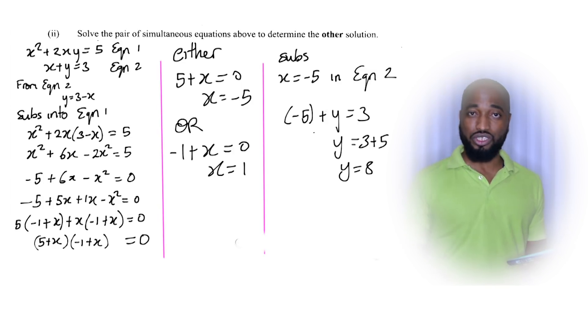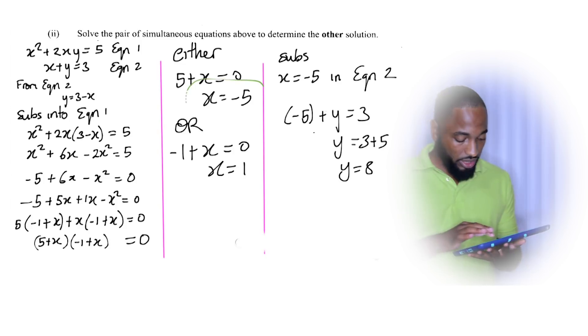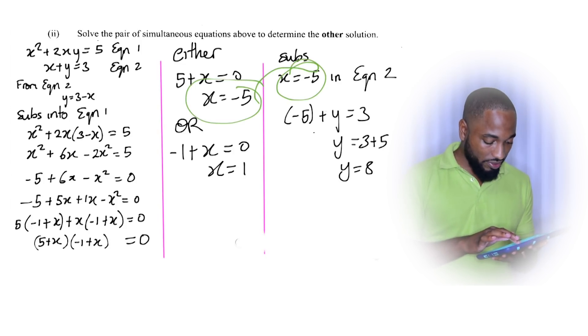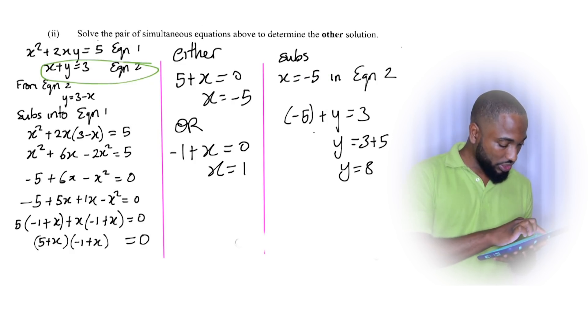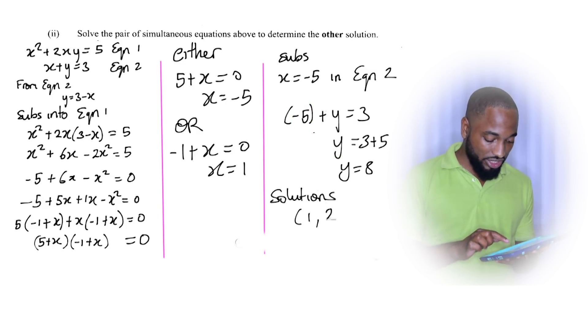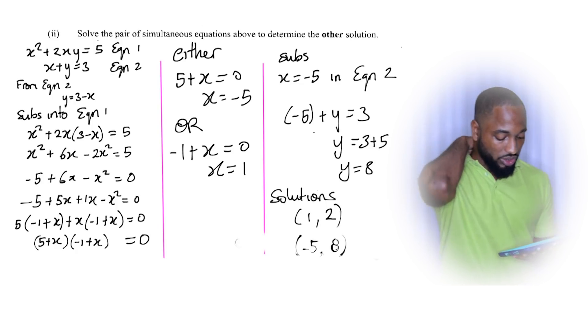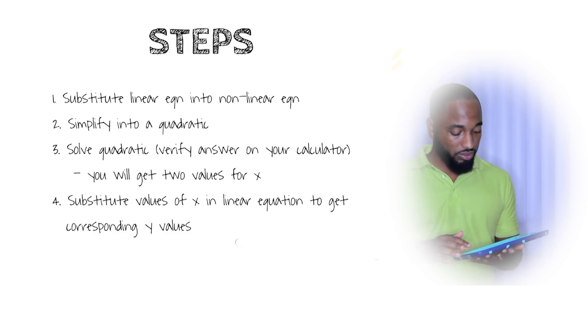So you substitute x = -5 into equation 2, which is the linear equation. Anywhere I see x I put -5, work out for y, and I get y = 8. So that's the other solution. The solutions are (1,2) and the next solution is (-5,8). These are the steps that you want to use all the time.